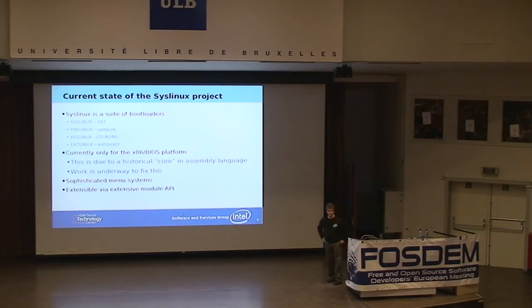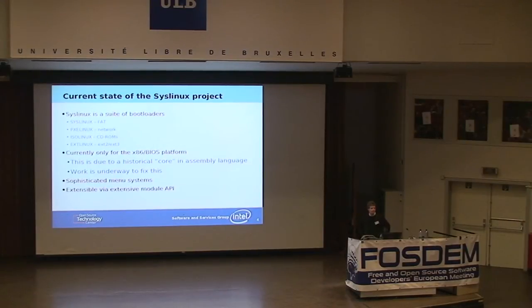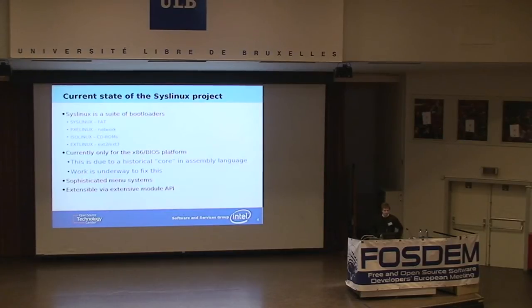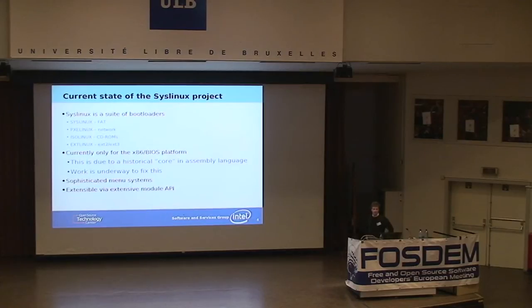SysLinux, as of right now, is a suite of bootloaders. It currently consists of four derivatives — this is a bit of a legacy term from when the differences between them was much bigger in terms of code, but it really comes down to different file system support. The original SysLinux, in all caps just to be extra confusing, is for FAT file systems — MS-DOS file systems. This was originally done for boot floppies.